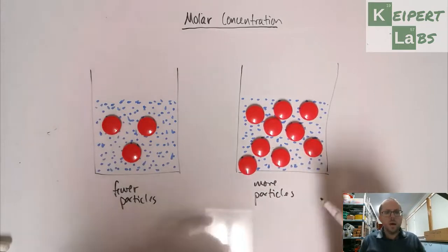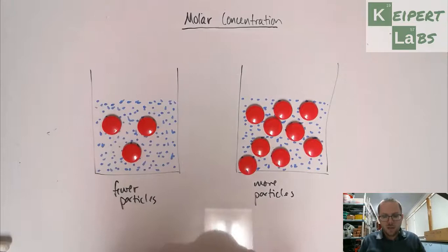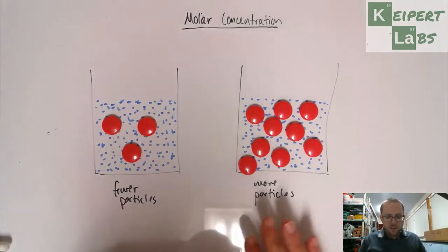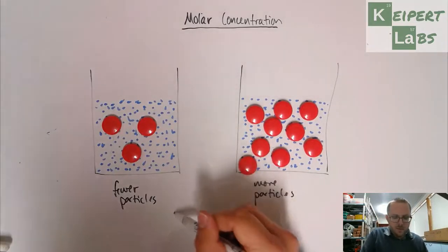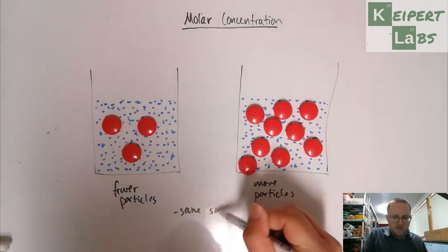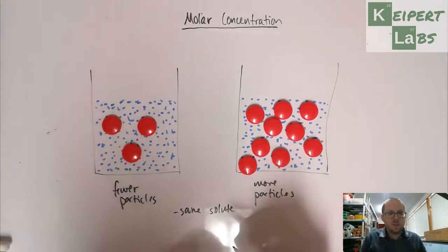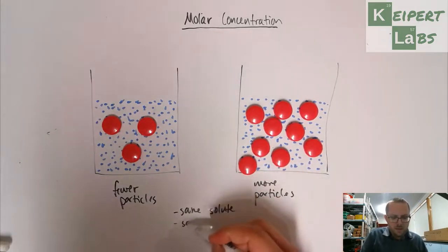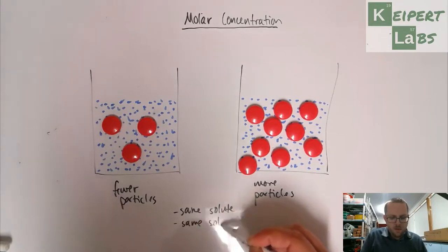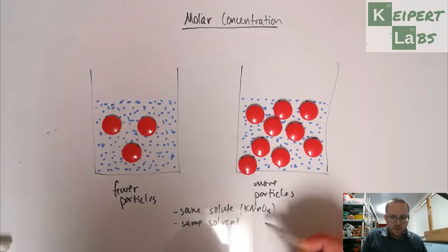But we know that it's the same solute, so the actual stuff that's being dissolved, and the same solvent. So the solute is our potassium manganate, our solvent is our water. So we need a way to be able to express a difference of how these things are different.